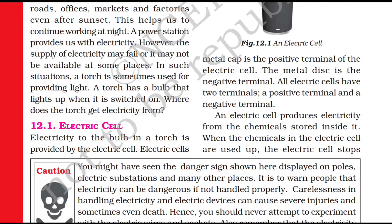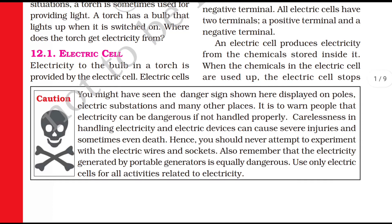A torch has a bulb that lights up when the switch is turned on. Where does the torch get its electricity from? Let's talk about the electric cell. We use a cell in the torch. Chemical reactions inside the cell create electricity, and through this electricity the bulb glows.